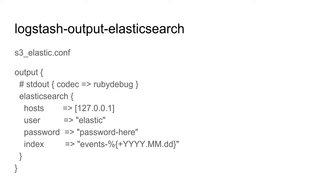For output, the pipeline can have multiple outputs, but here we're just sending to Elasticsearch. We specify the hosts, username and password, and an index pattern — we'll call it events-{date}. This follows the same log file rotation pattern we do on a daily basis. We can also have a stdout output, which is useful for debugging, but here I just comment it out.